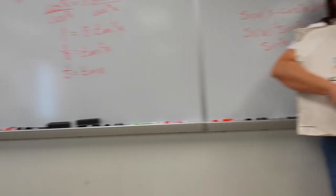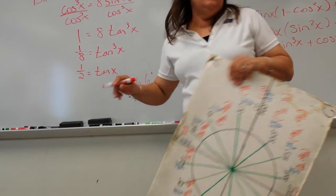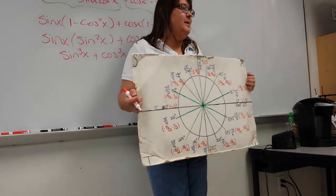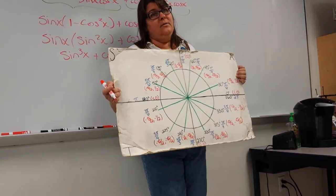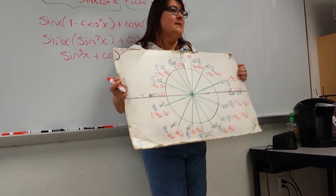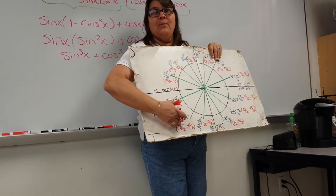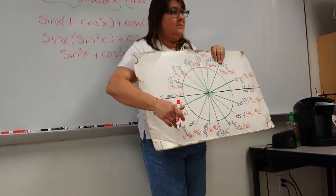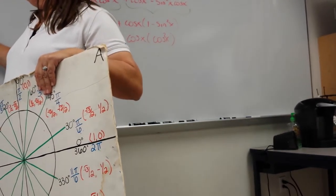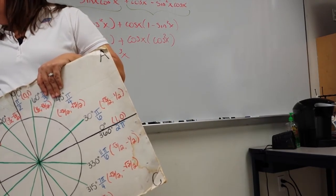Tangent equals one-half. So what is x? 26.6 degrees, using tan to the negative one of one-half on your calculator. And its corresponding angle? Add 180. So 180 plus 26.6 gives approximately 206.6. Put parentheses around the one-half on your calculator and try it again to confirm. You get 26 and 206-point-something.